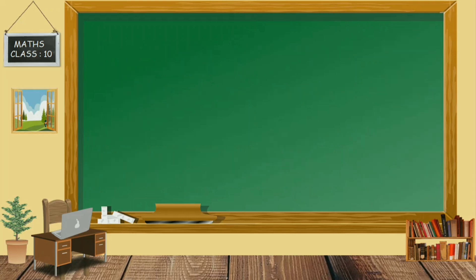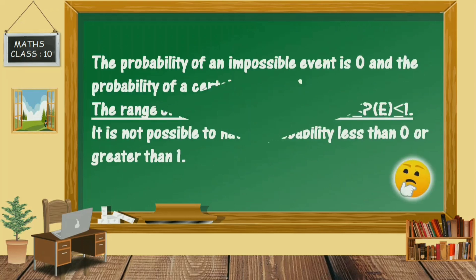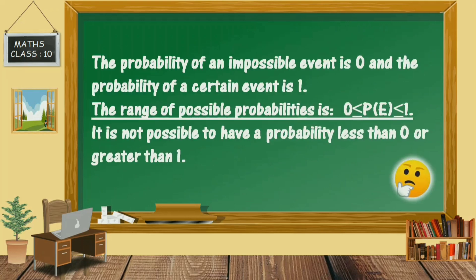As you can see, the range of probability is 0 ≤ P(E) ≤ 1. Note that it is not possible to have a probability less than 0 or greater than 1.